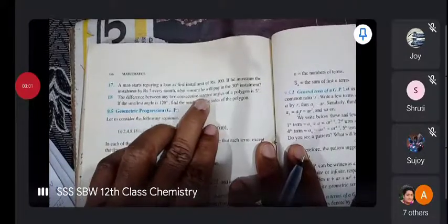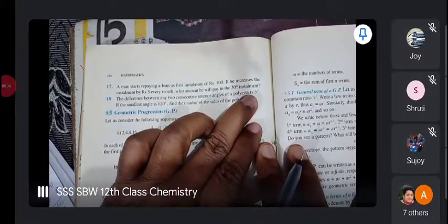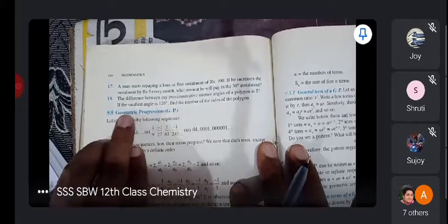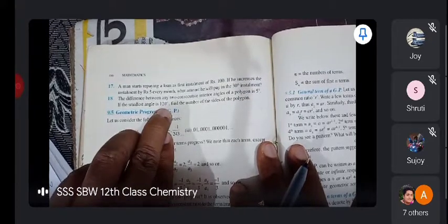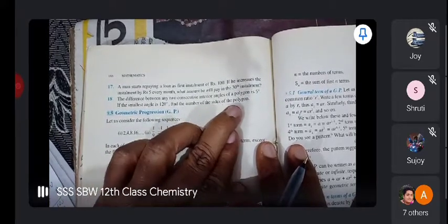The difference between any two consecutive interior angles of a polygon is 5 degrees. The smallest angle is 120. Find the number of sides of the polygon.